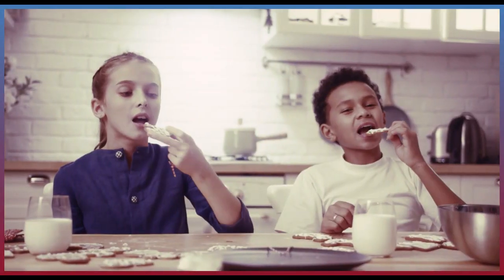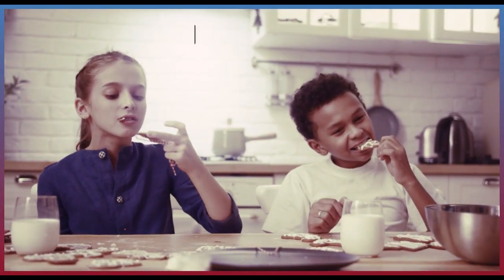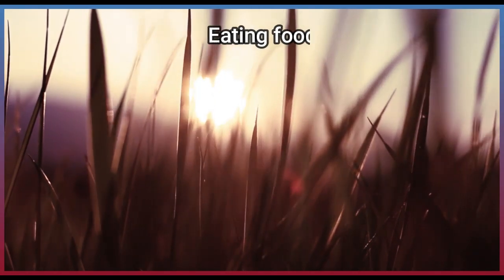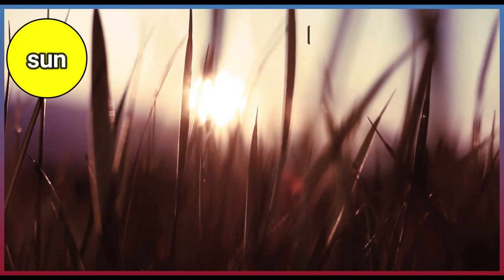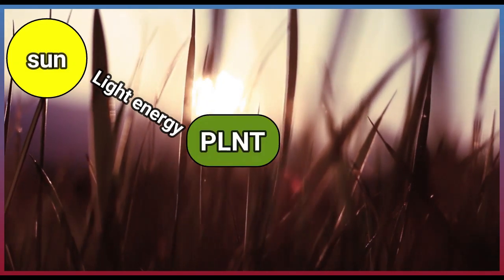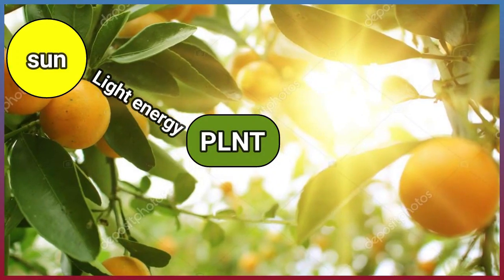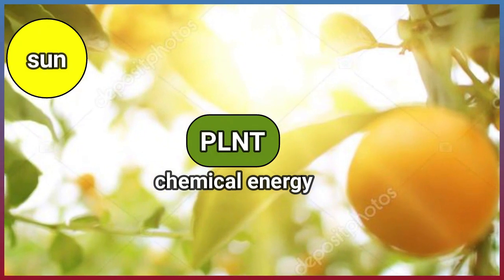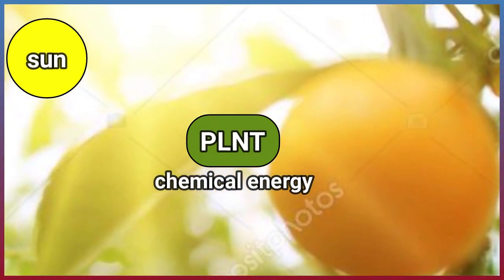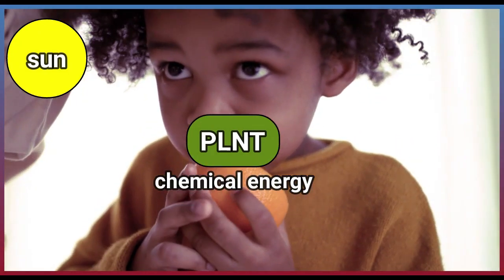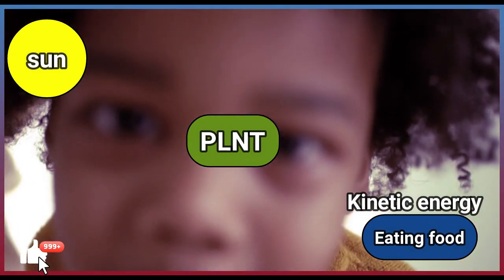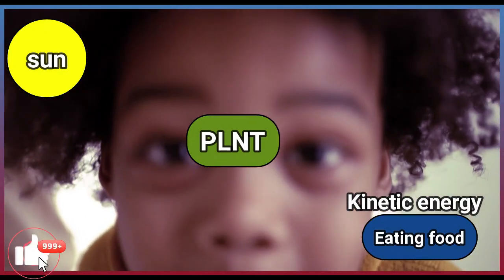A simple energy chain familiar to all of us is eating food. This energy chain starts with light energy from the sun hitting Earth. A plant, such as an orange tree, transforms that light energy into stored chemical energy as it makes sugars inside the fruit. When you eat the orange, your body converts the chemical energy stored inside the fruit into kinetic energy to move.